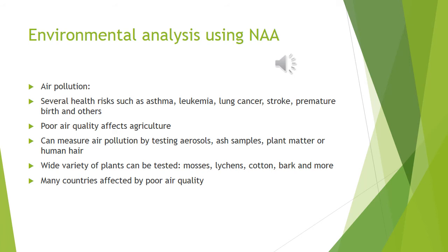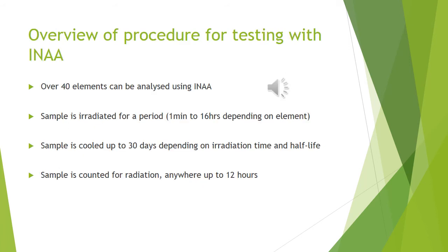Air particulate matter has been tested using instrumental NAA in many countries concerned with air pollution, such as Japan, China, Korea, and many others. Irradiation is applied to samples, followed by cooling, and then radiation counting. One paper describes the number of elements able to be detected by NAA using aerosols as upwards of 40. Air particulate matter of as small as 2.5 microns can be activated and measured. Irradiation of samples can be anywhere from 1 to 2 minutes up to 16 hours, with cooling times of up to 30 days depending on half-life. Counting periods can then range from 5 minutes to 12 hours, so the process can be quite lengthy.